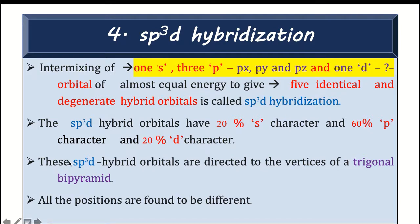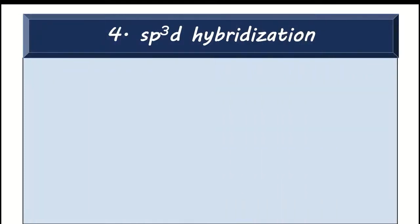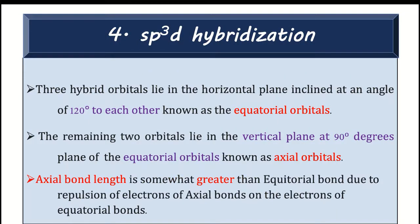The sp3d hybrid orbitals formed are directed to the vertices of a trigonal bipyramidal arrangement. All five positions are found to be different. The hybrid orbitals lying in a horizontal plane inclined at 120° to each other are known as equatorial bonds or equatorial orbitals, and the remaining two orbitals located in the vertical plane at 90° to the equatorial plane are known as axial bonds.